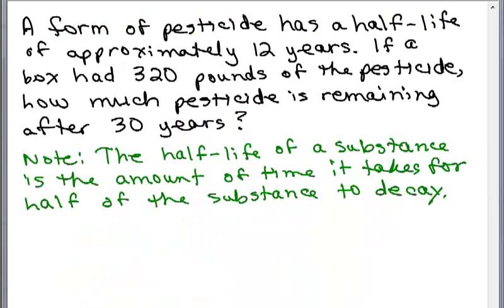Here's the problem. A form of pesticide has a half-life of approximately 12 years. If a box had 320 pounds of the pesticide, how much pesticide is remaining after 30 years? So first of all, what is a half-life? The half-life of a substance is the amount of time it takes for half of the substance to decay. Before going any further, let's see what this means if we were trying to figure it out without using a formula.